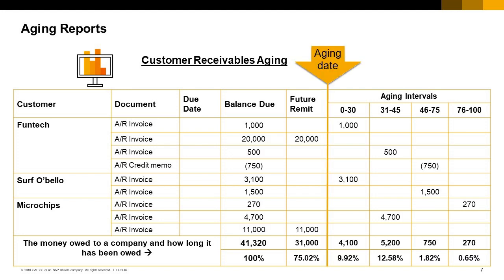You can specify an aging date after which the due dates are to be calculated. You can also specify intervals in days, months, or periods for grouping receivables by how old they are. As you can see in the graphic, this report gives you a quick look at how overdue your invoices are. At the bottom of the report, you can see the percentages of overdue invoices in each aging interval.